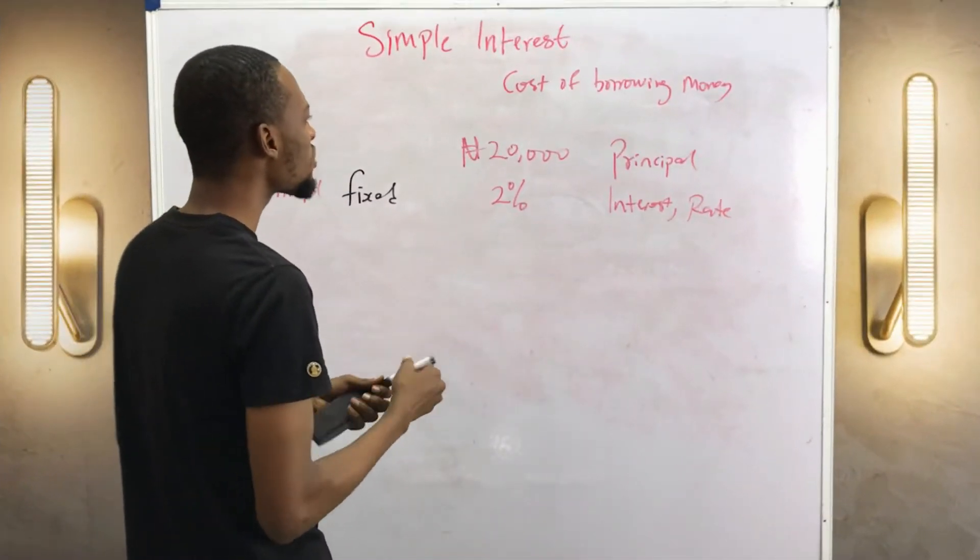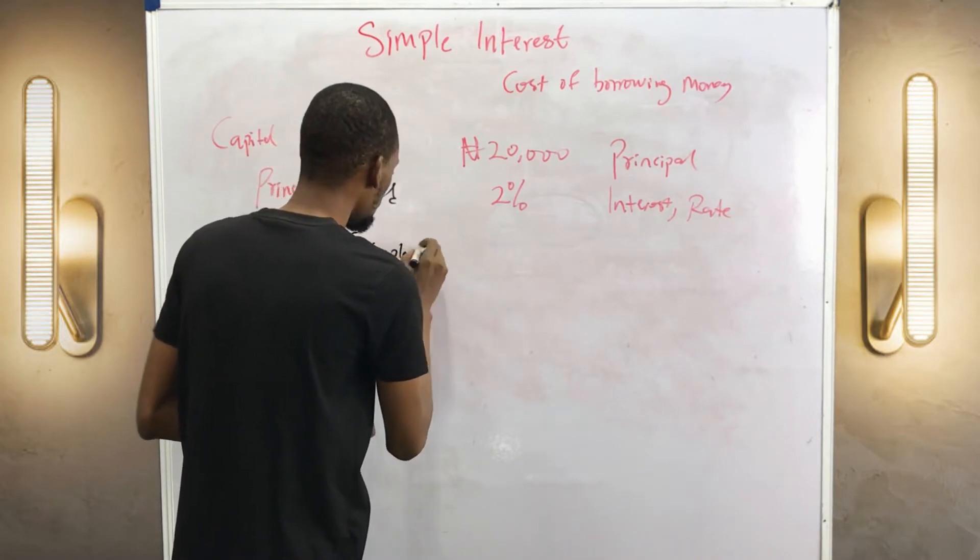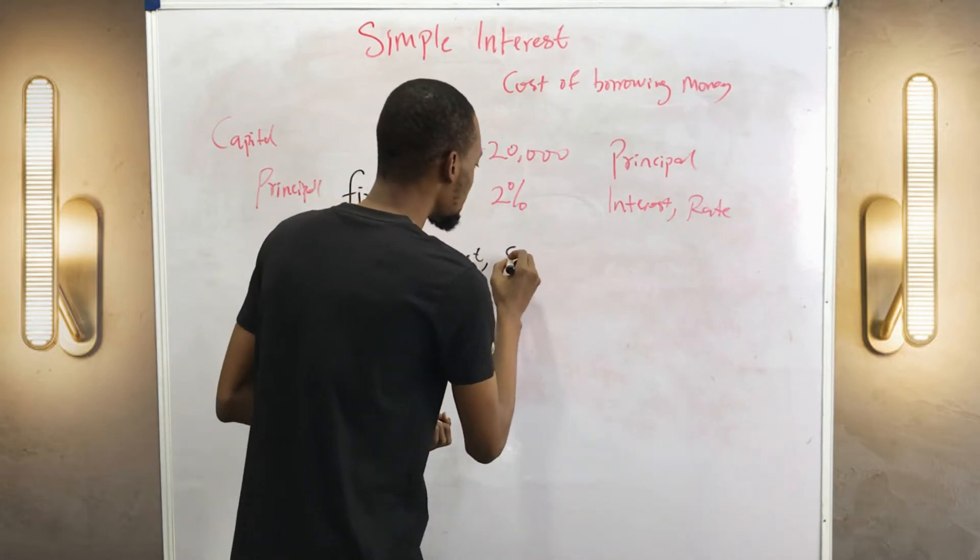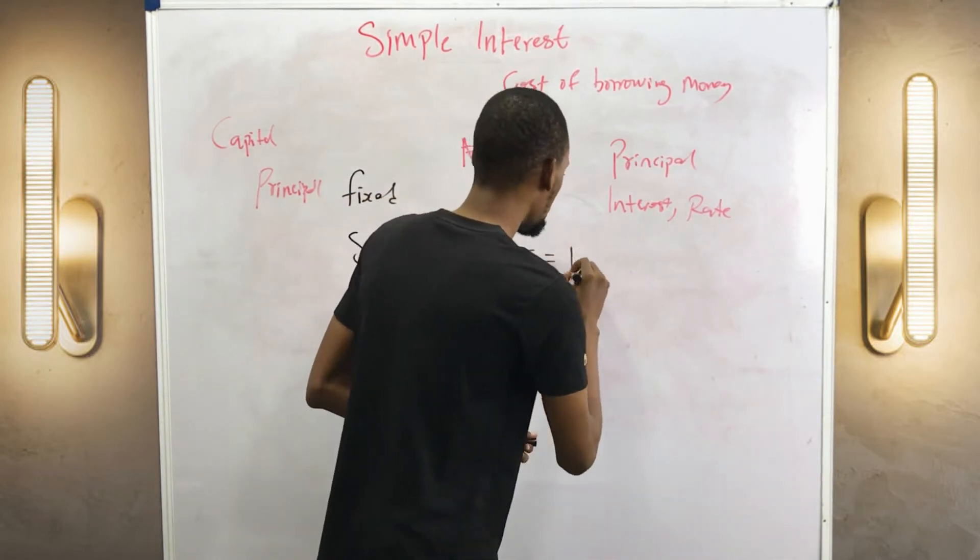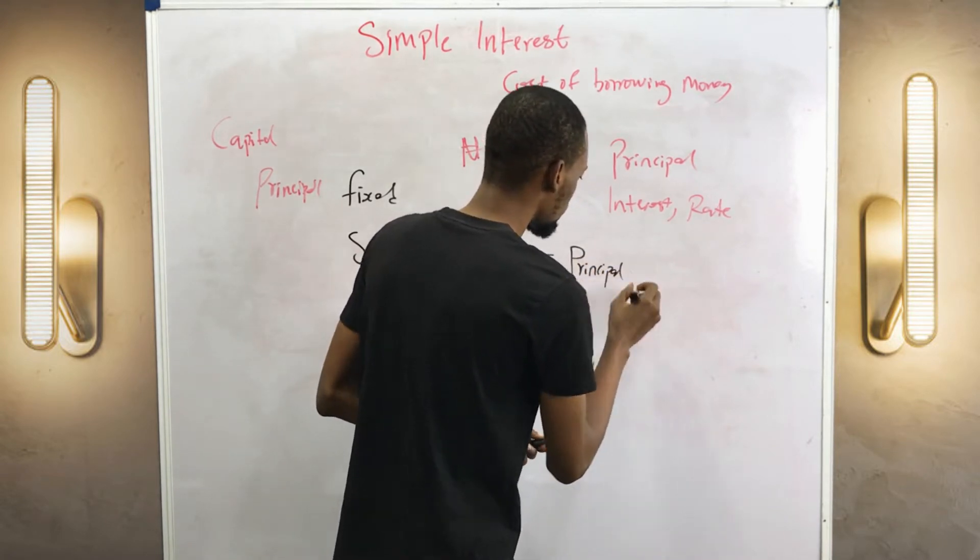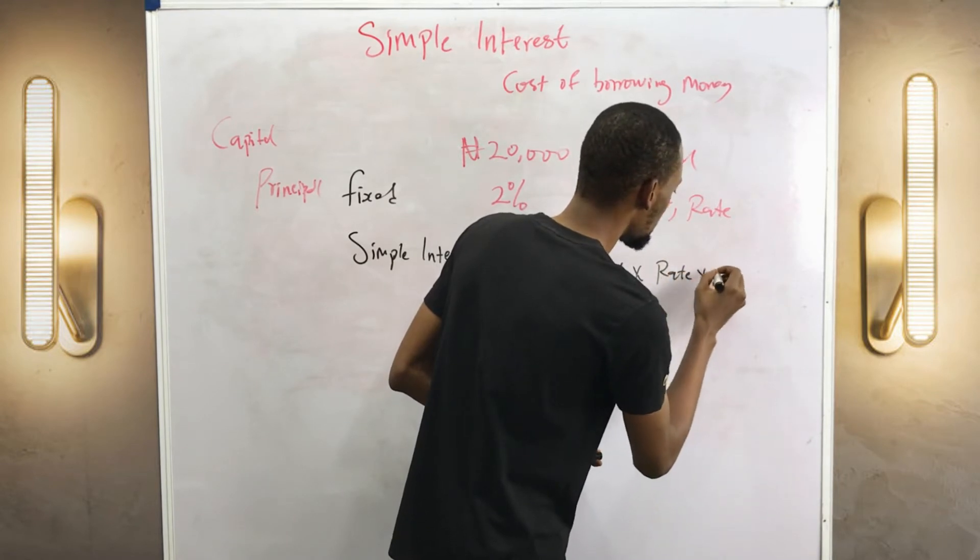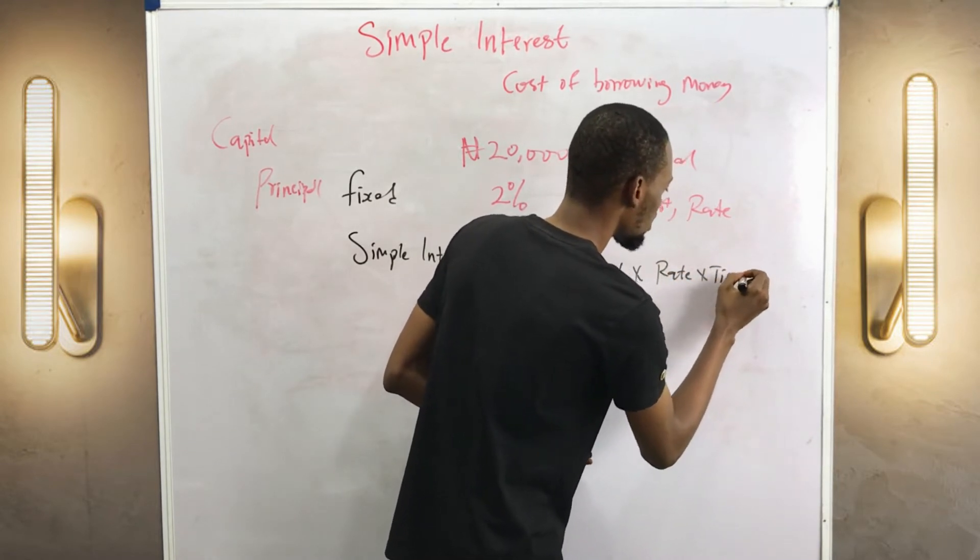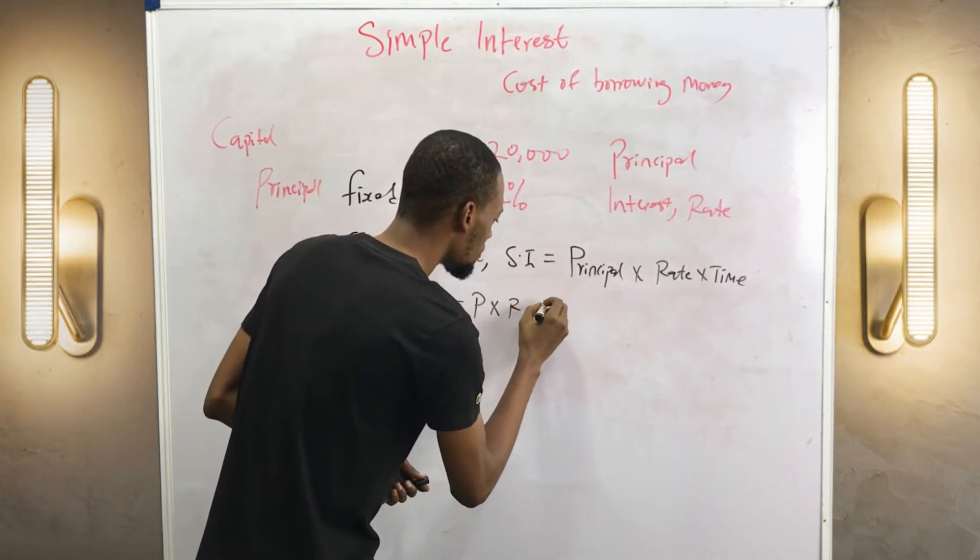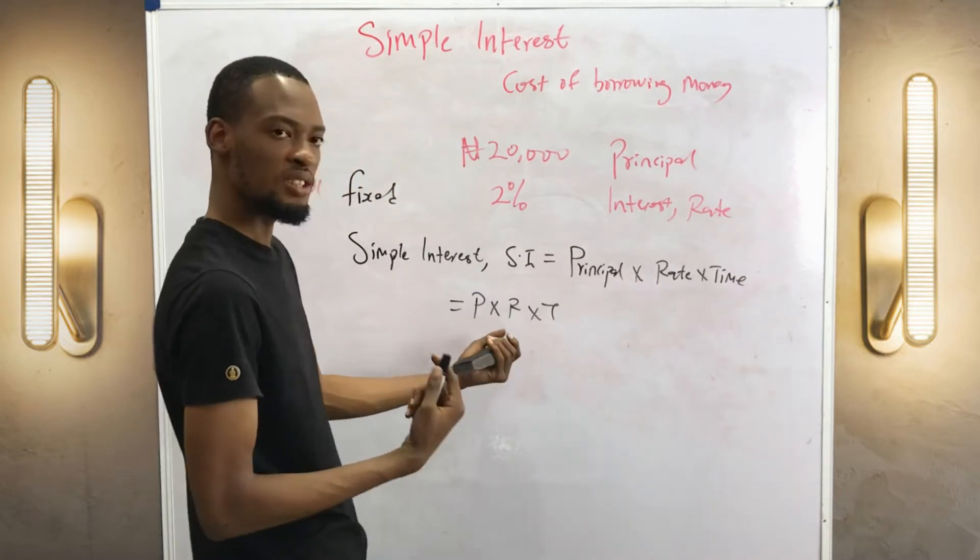Now to calculate simple interest, the short form SI, is simply principal times rate times time, which is the same thing as P × R × T, where principal is the money borrowed and rate is the interest you pay.